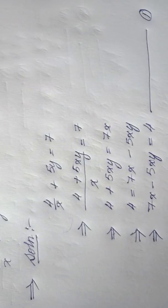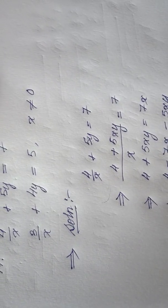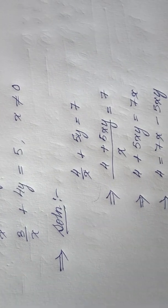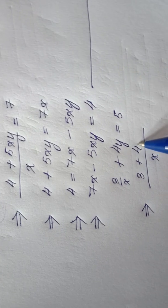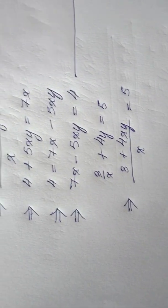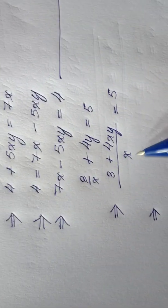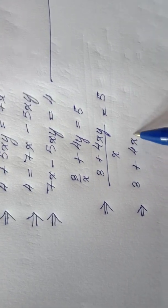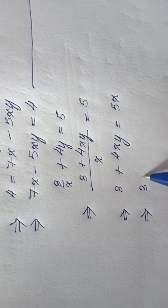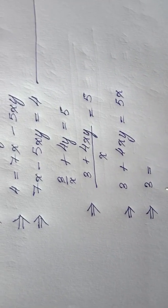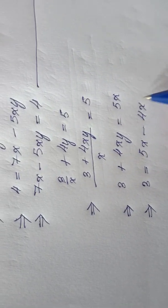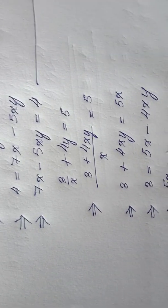Similarly for the second equation, 3/x + 4y = 5, I take the LCM, which is x. So (3 + 4xy)/x = 5. Moving x to the right-hand side gives 3 + 4xy = 5x. Transferring 4xy gives us equation 2: 5x − 4xy = 3.